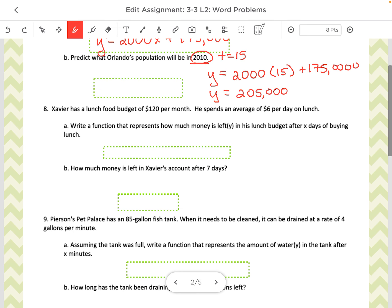Okay, next one. Xavier has a lunch food budget of $120 per month. He spends an average of $6 per day. So again, there's that, what he's doing every single day. So that's going to be my slope. And this is what he started with. So that's my y-intercept. Okay, so my equation would be y equals, but he's spending $6. So that's going to be a negative 6x. And then we started with 120.